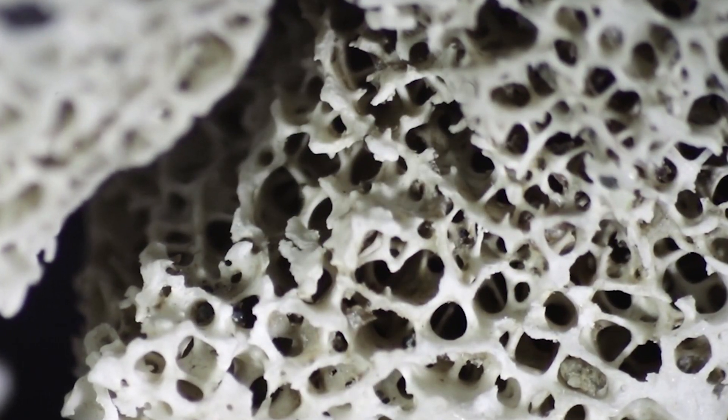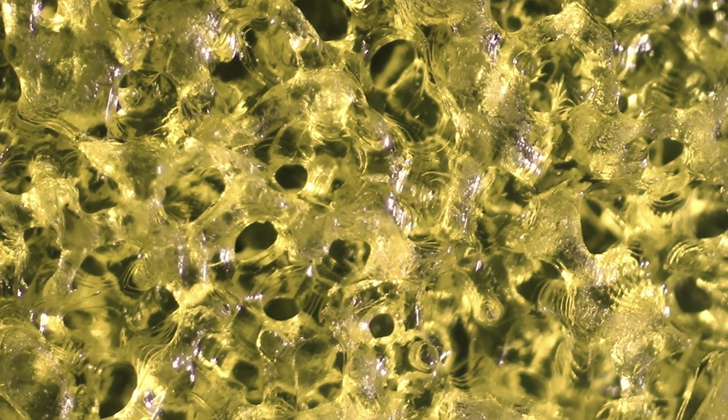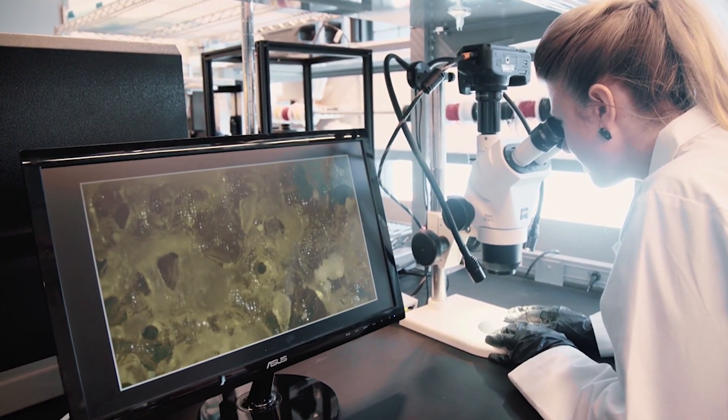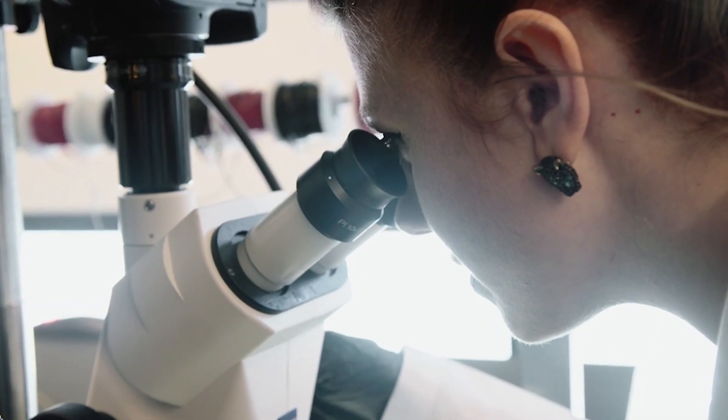The trabecular structure is the spongy part of bone. Stem cells have an intelligence that programs them to become the type of cell that they need to be. If I put them onto a lattice that's shaped like bone, then they will become bone.